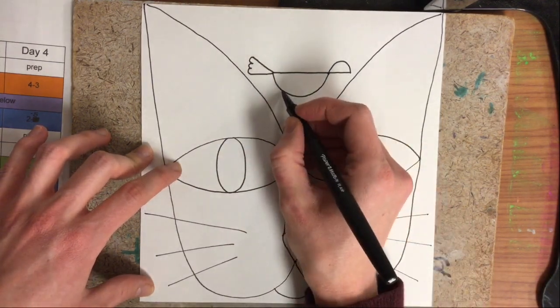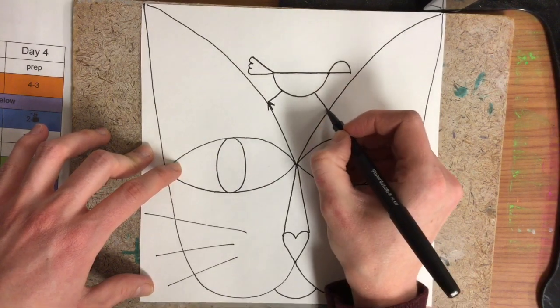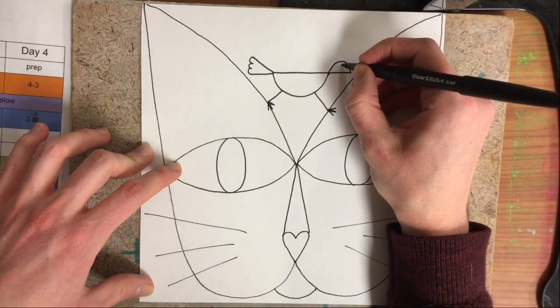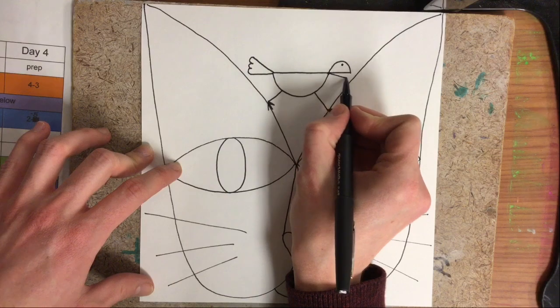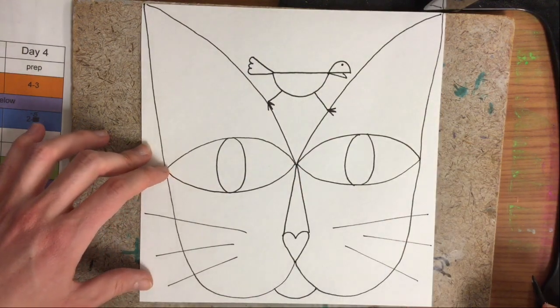We can also give our bird a couple of feet, maybe like he's stepping on that cat's head. Give our bird a little eye and maybe even an extra little beak, and we are good to go.